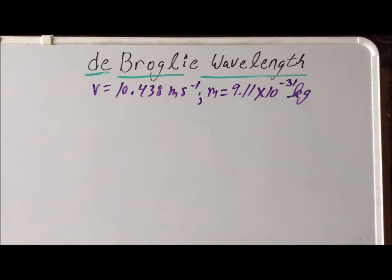Hello, in this video we would like to calculate the de Broglie wavelength for an electron going at exactly the same speed as the Jamaican sprinter Usain Bolt was going when he ran his world record time for the 100 meter dash.